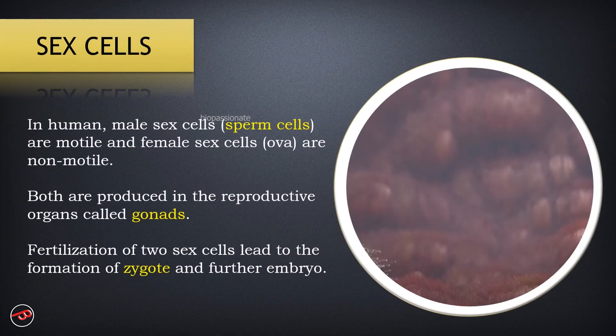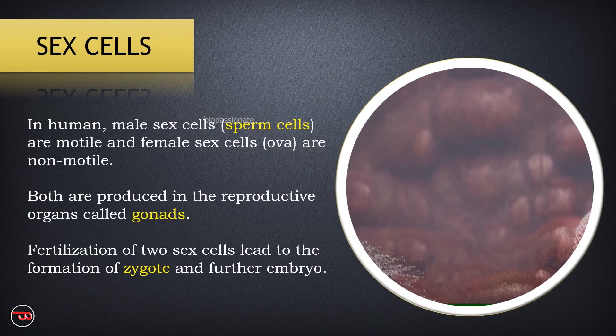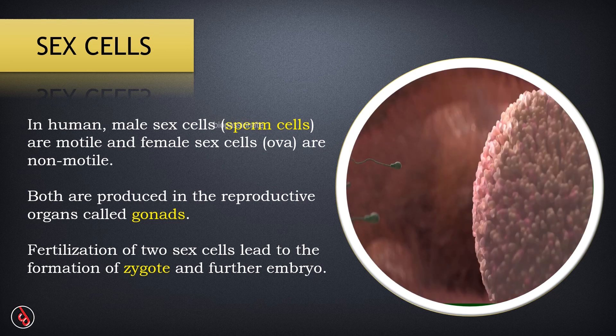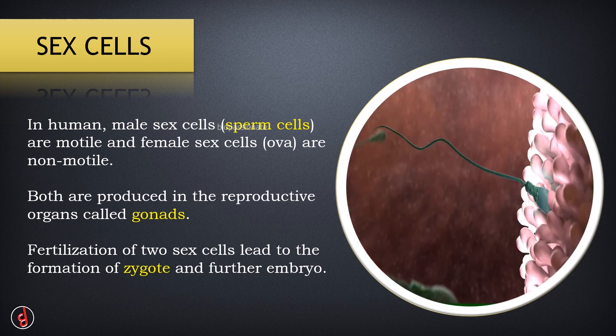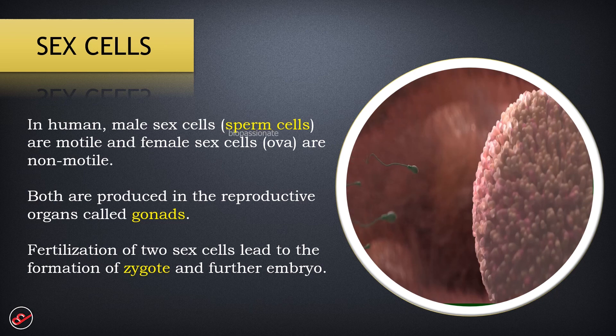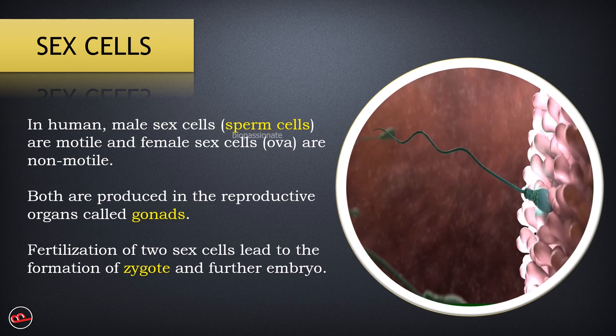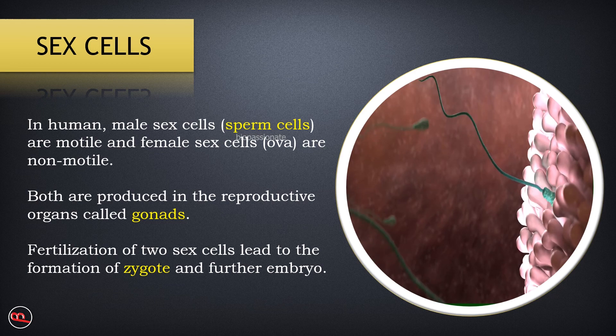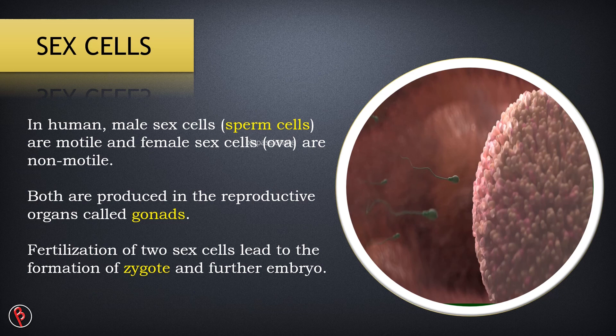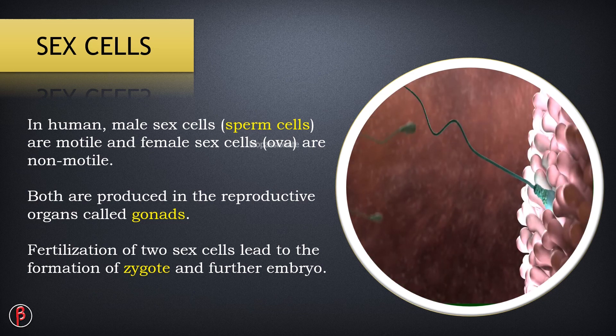Sex cells are very important in the continuation of life. In humans, male sex cells called sperm cells are motile, and female sex cells called ova are non-motile. Both sex cells are produced in the reproductive organs called gonads—testes and ovaries in male and female respectively. Fertilization of two sex cells leads to the formation of a zygote and further embryo.